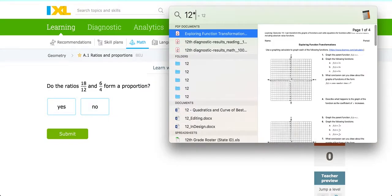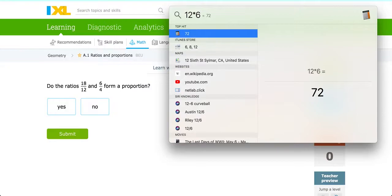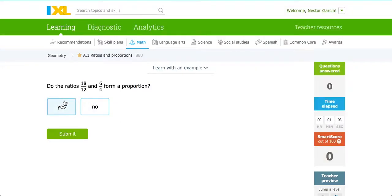Again, you can verify on a calculator, 12 times 6, 72. And that allows you to conclude that yes, we have a proportion because both cross products are equal to each other.